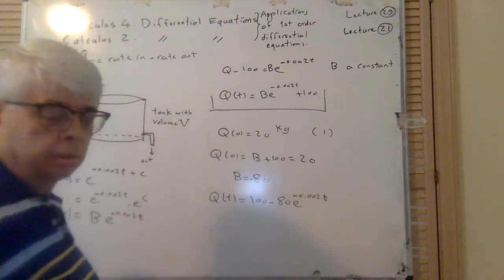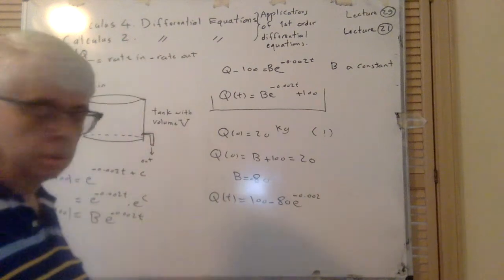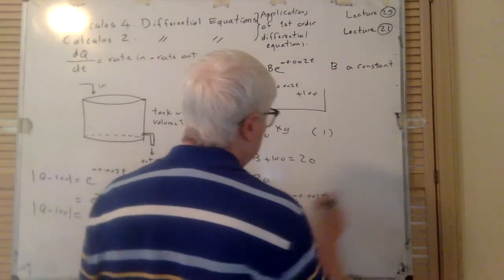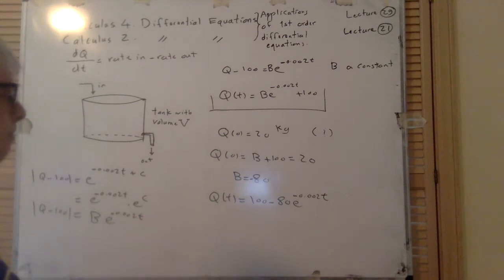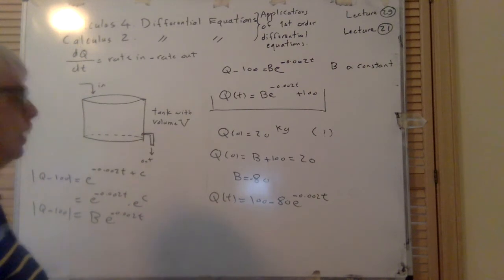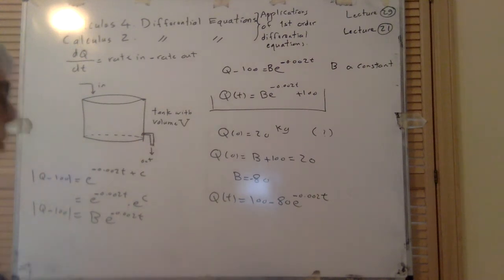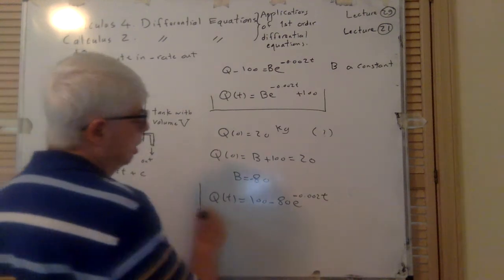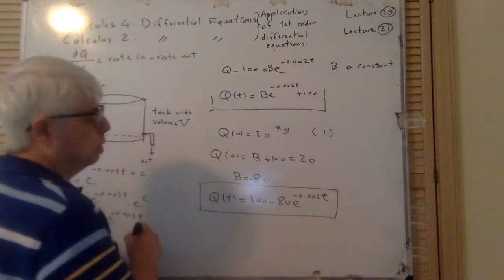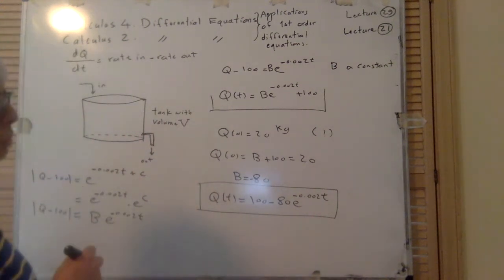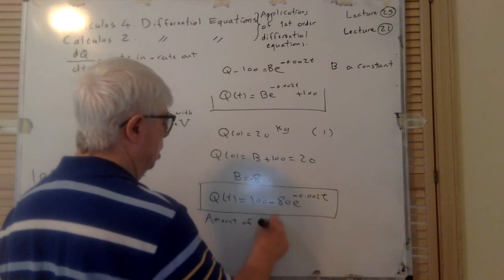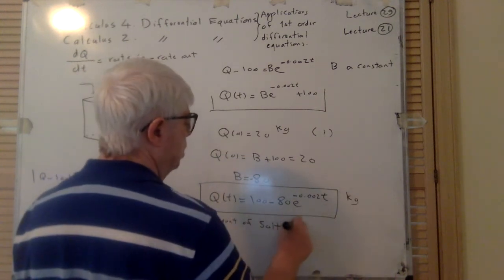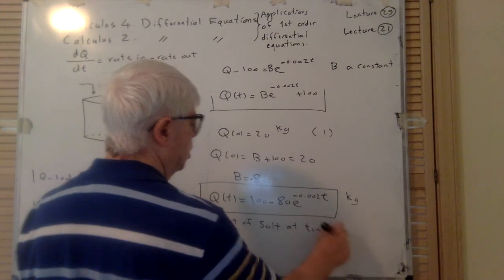The solution is Q(t) = 100 − 80e^(−0.002t). This is the amount of salt in kilograms in the tank at time t.